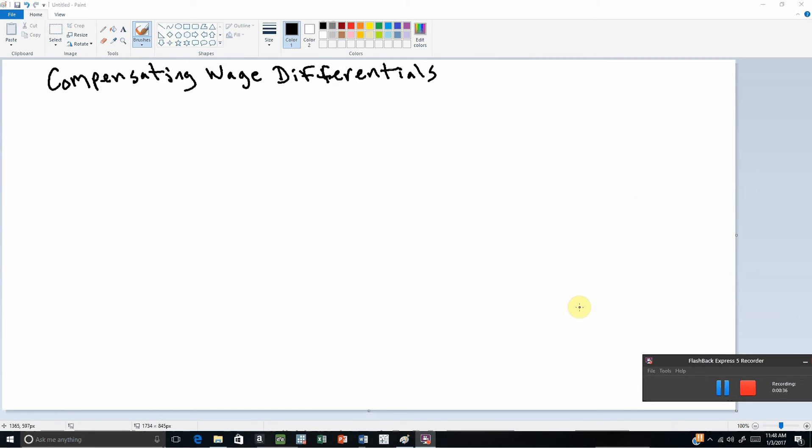Alright, so let me begin. We'll do a problem here. Let's assume that all workers have a utility function given by the following equation.